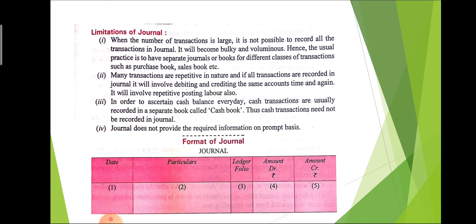However, with its advantages, journal also has limitations. When the number of transactions is large, it is not possible to record all of them in the journal — it is a lengthy or bulky process. Many transactions are repetitive in nature, so recording all of them involves debiting and crediting the same account again and again, which is a time-wasting activity. Cash transactions are usually recorded in a separate cash book to ascertain cash balance every day, so there is no need to maintain cash book in the journal as well — that is also one of the major disadvantages.